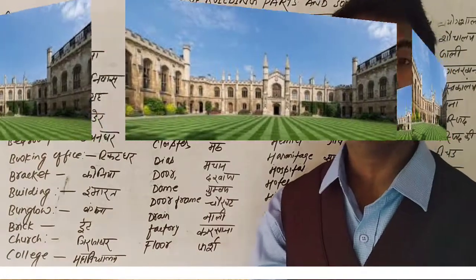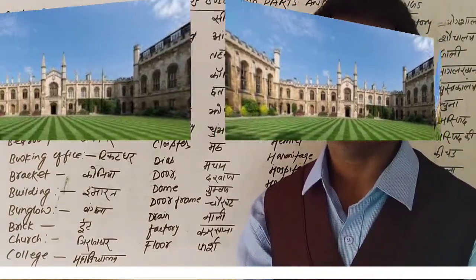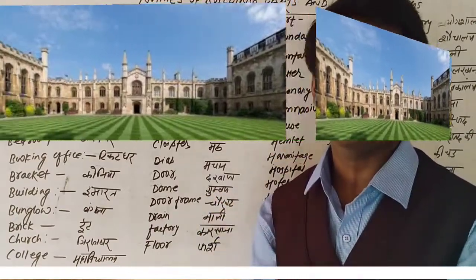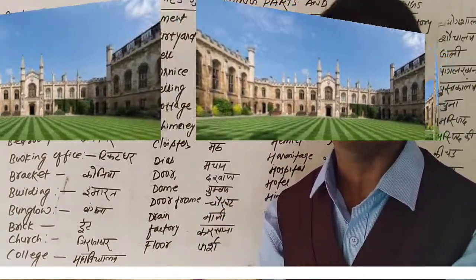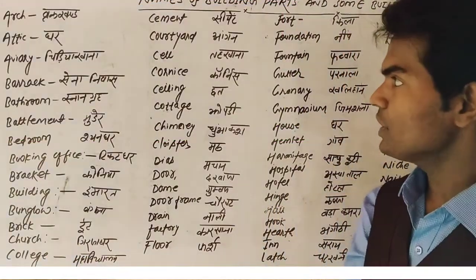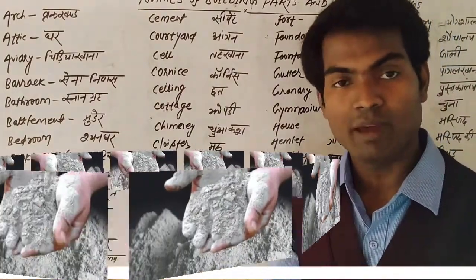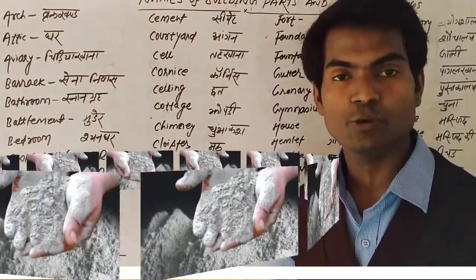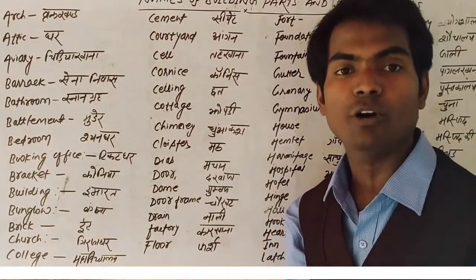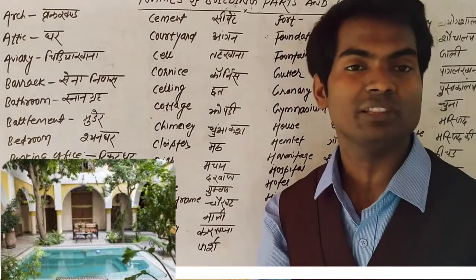College — when students pass standard 10 they are excited to take admission in standard 11, meaning in college. They want to enjoy in college. College means 'maha vidyalaya.' Cement — cement is the material which is required to make buildings, that is called cement.